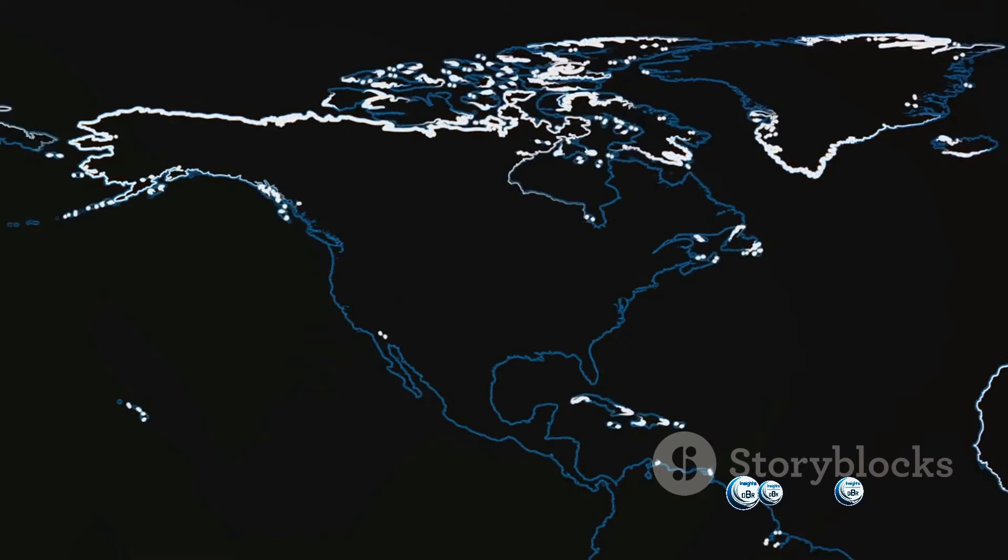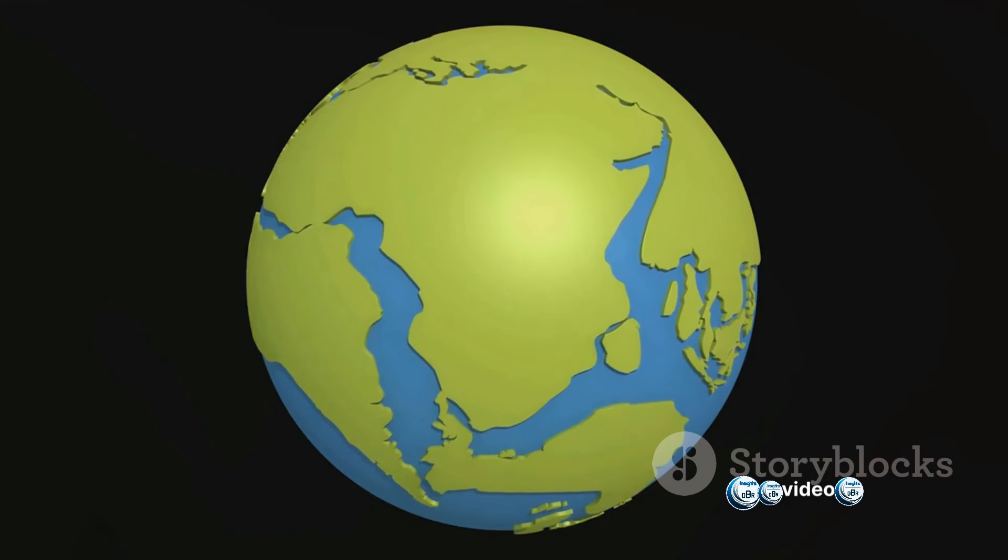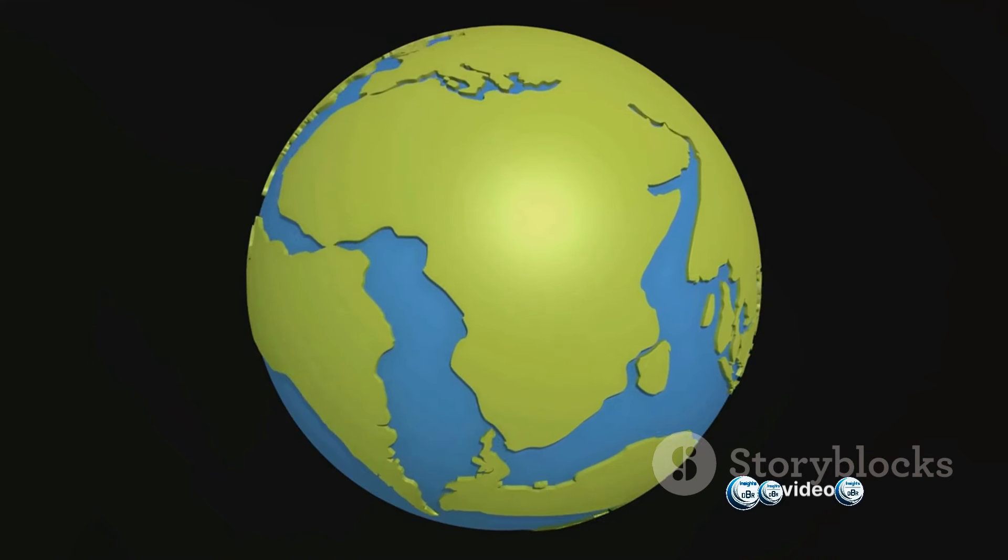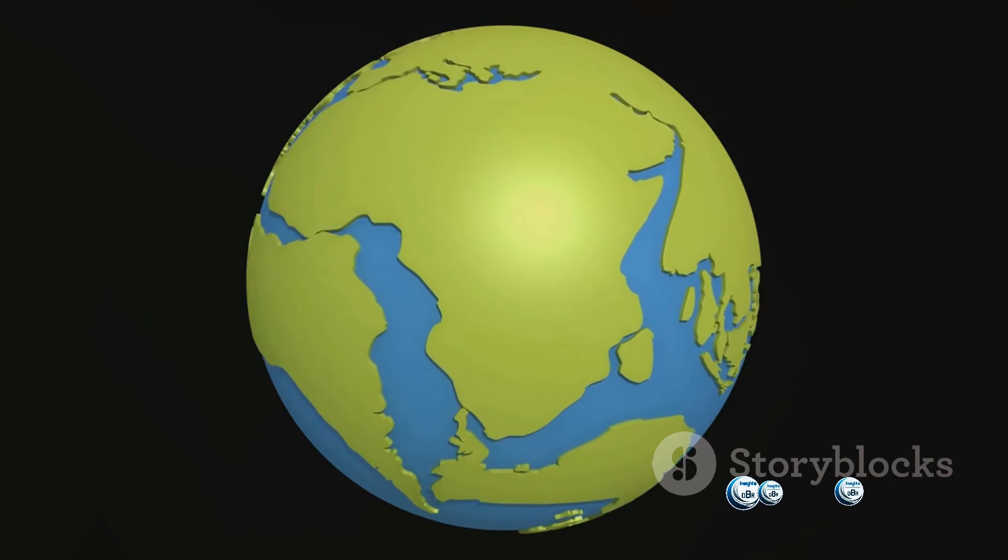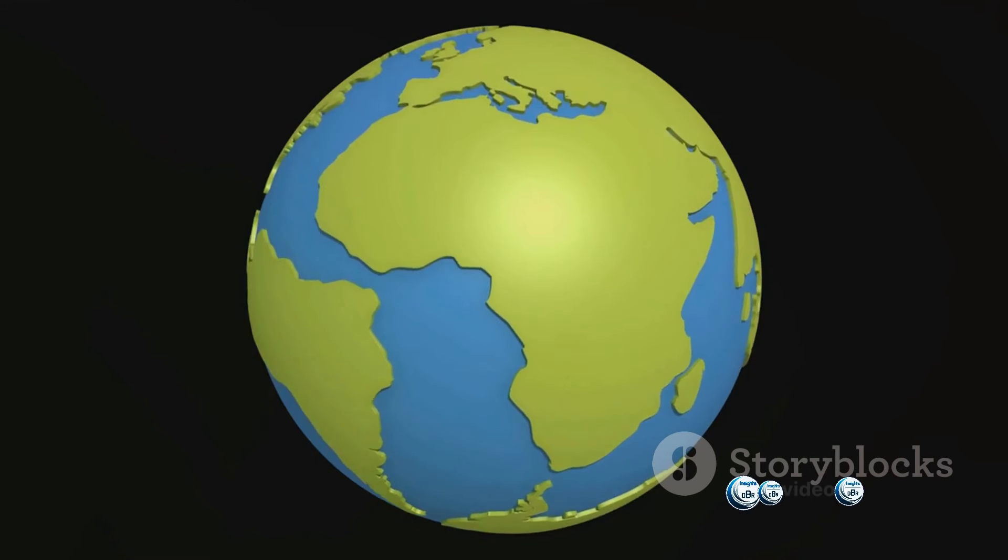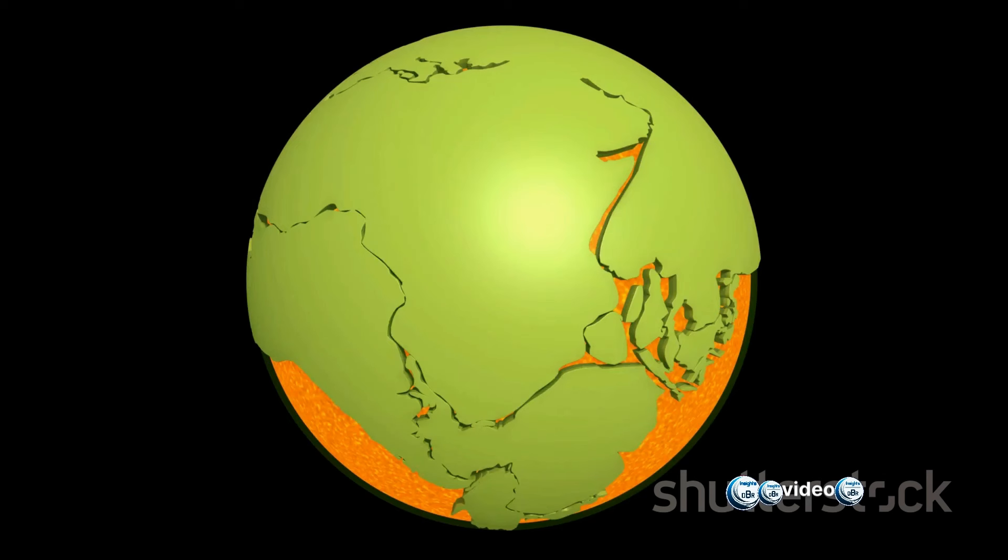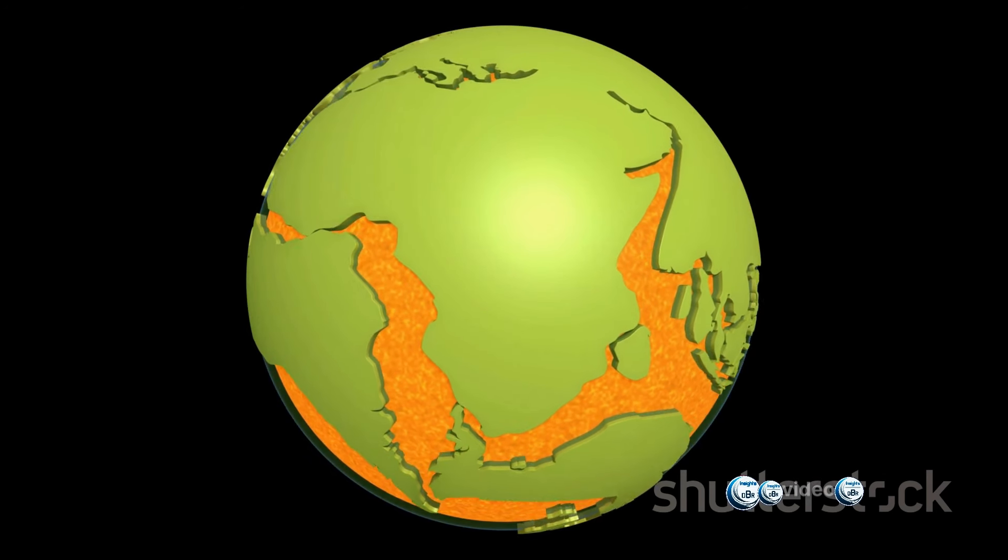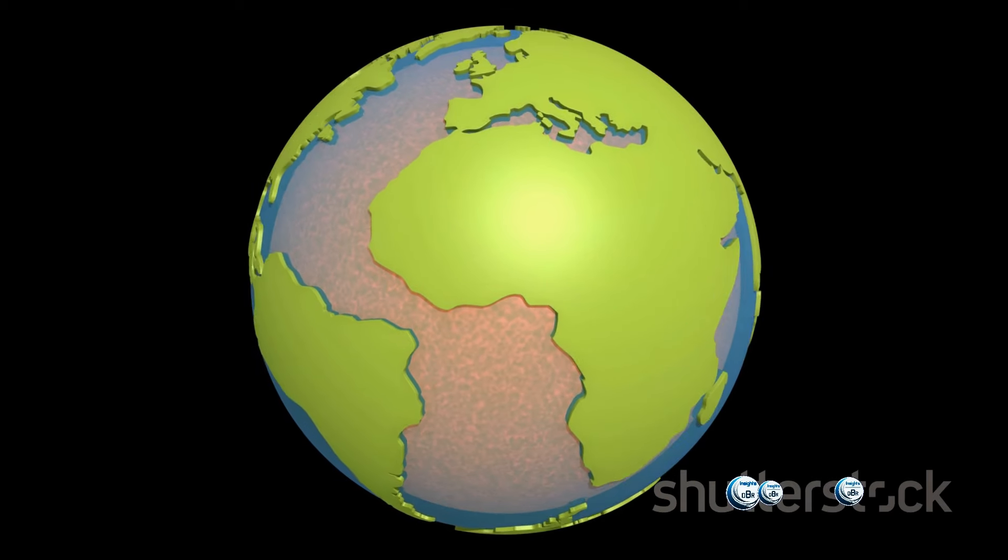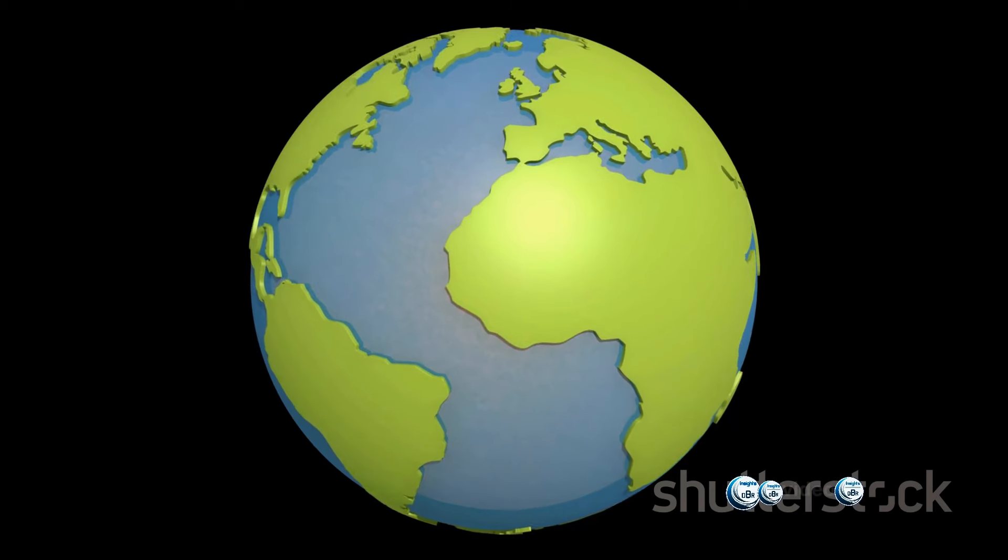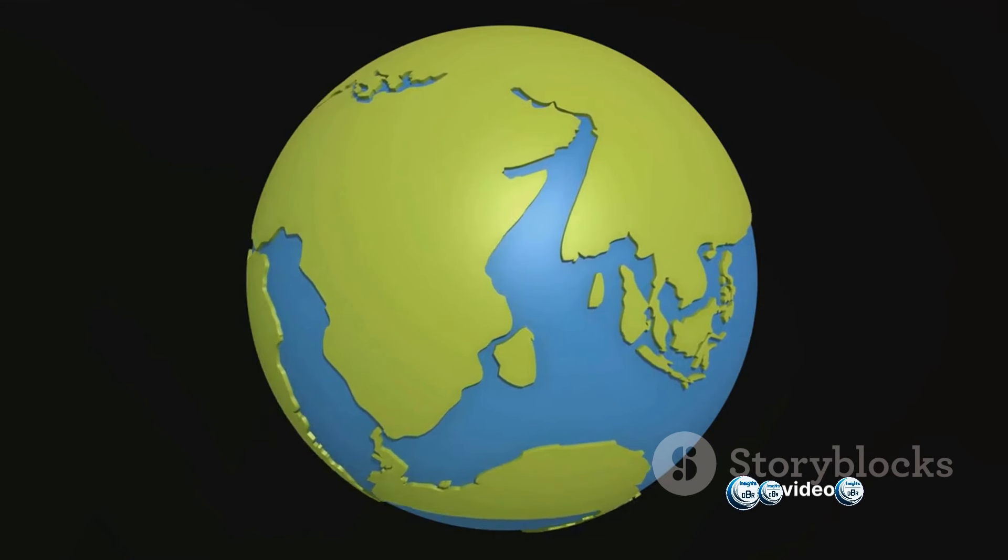Plate tectonics never rests, and continents continue their slow march. Scientists predict that in about 250 million years, a new supercontinent will form. This future landmass, tentatively named Pangaea Proxima, will be a result of the Atlantic Ocean closing, bringing the Americas back together with Africa and Europe. This dramatic reshaping of our planet's surface will not only change the geographical map, but also impact global climate patterns, ocean circulation, and the distribution of life. The world of Pangaea Proxima will be vastly different from the one we inhabit today.